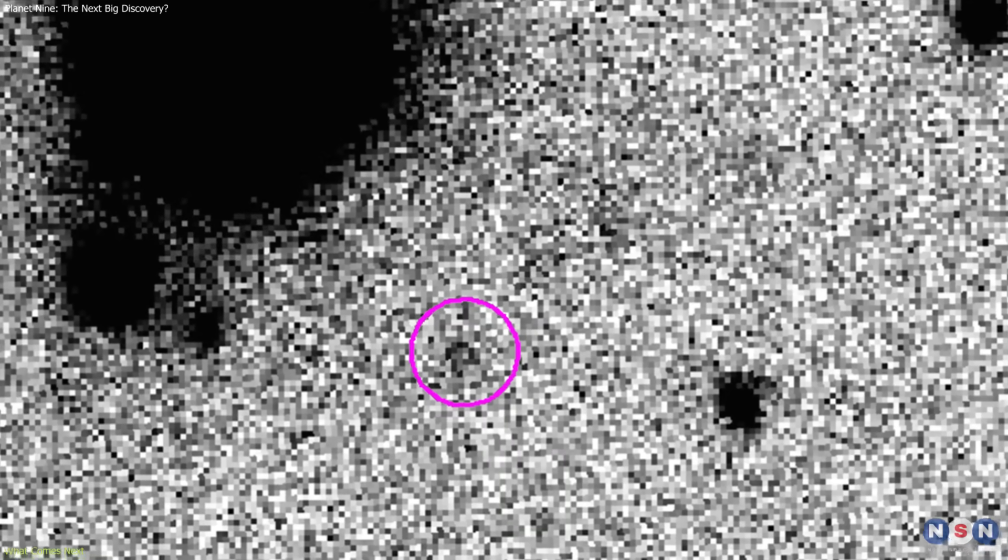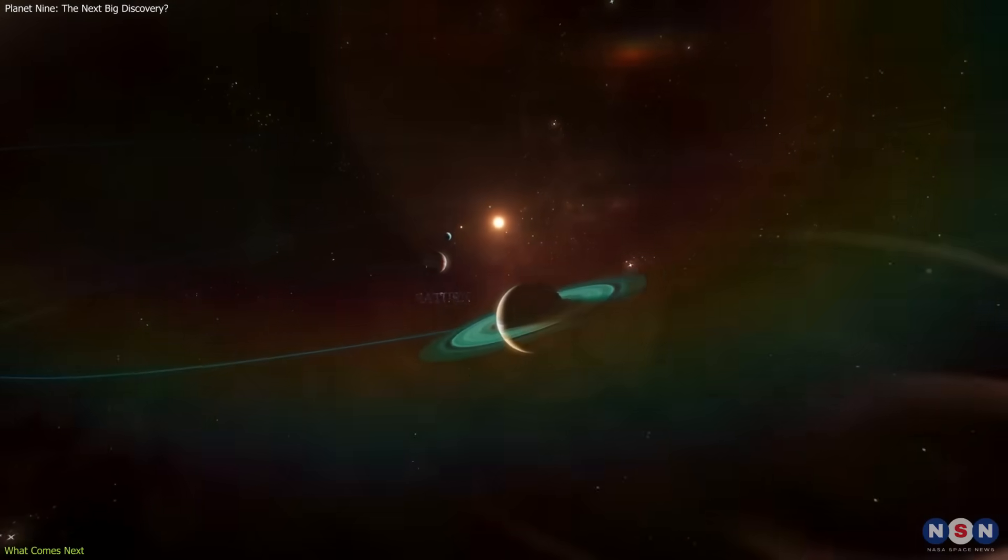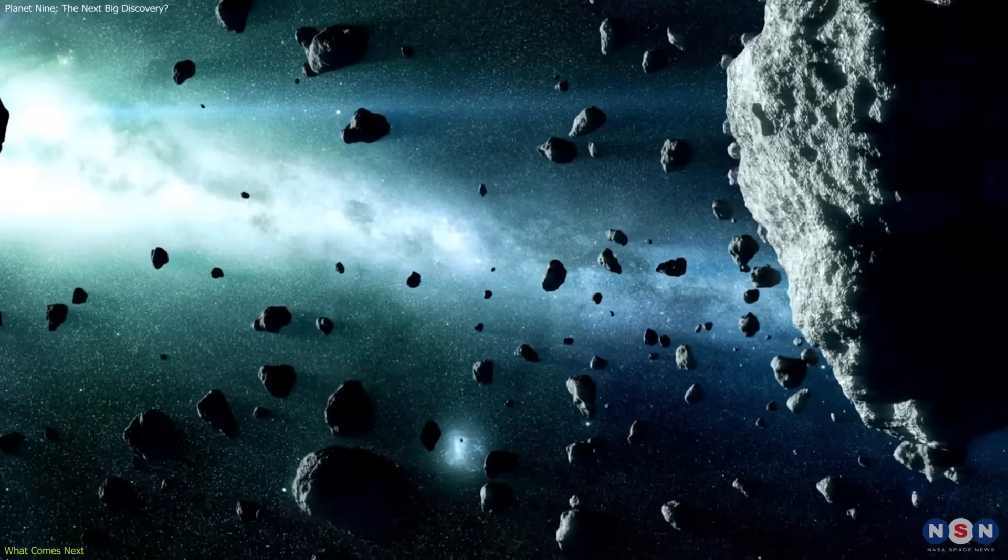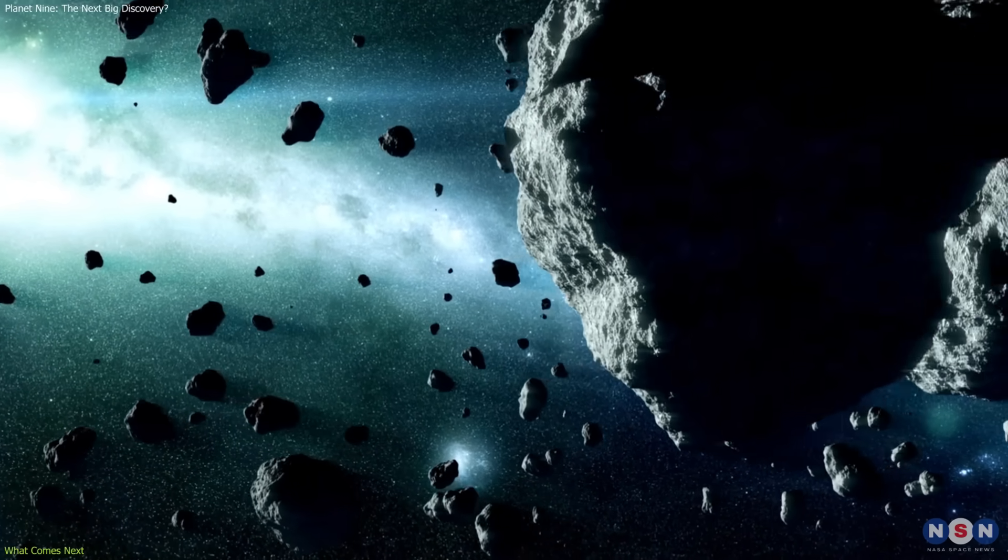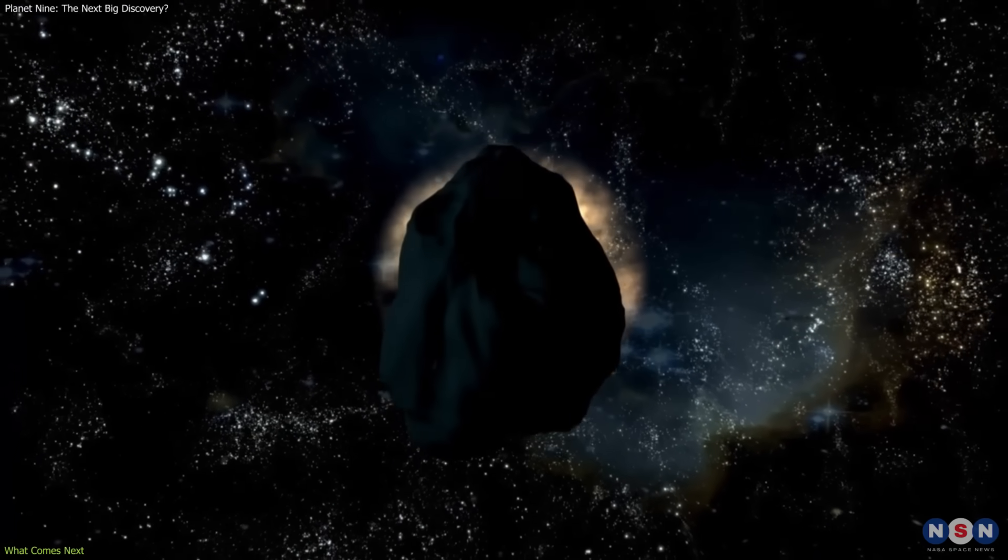The discoveries of Ammonite and 2017 OF201 show that the outer solar system is far more varied than once thought. Whether or not they point to it, they highlight just how little we know about this region. Each new detection expands the map and sharpens our understanding.